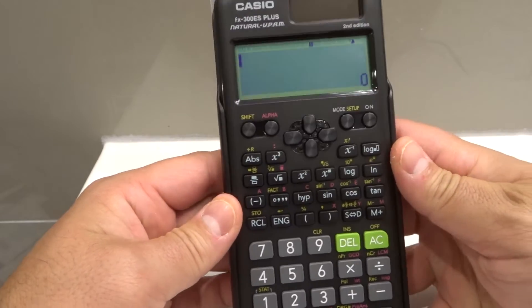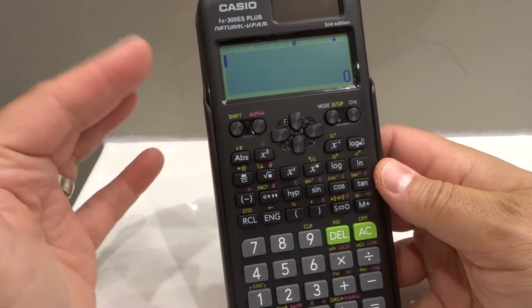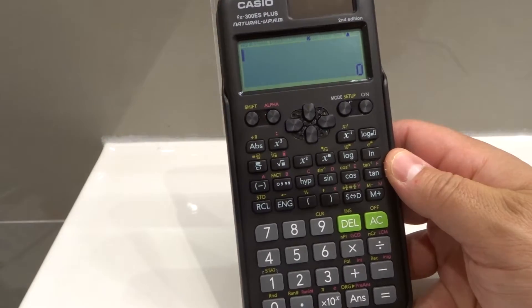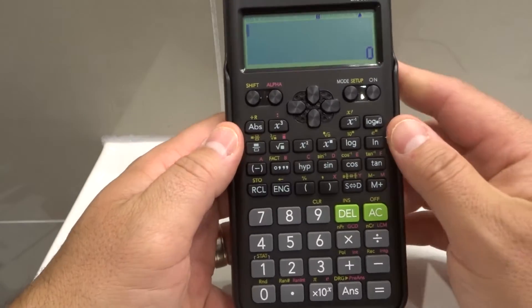So let's say you want to adjust the brightness or the contrast as we like to call it in calculator terms. You want to make it brighter or darker, lighter or darker. Very easy to do.